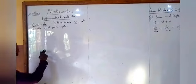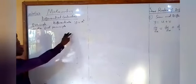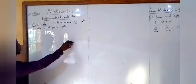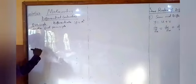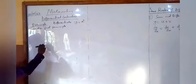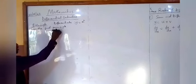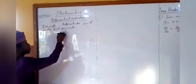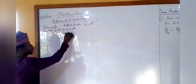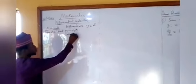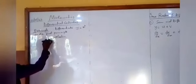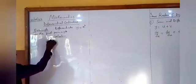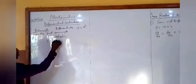So the question says: differentiate y equals x squared from the first principle. We are using the method of the first principle to differentiate y equals x squared.